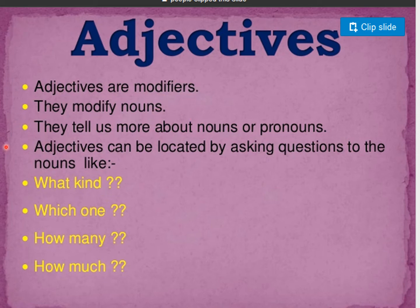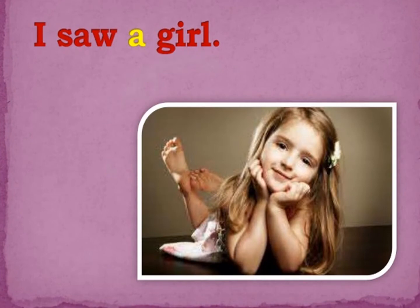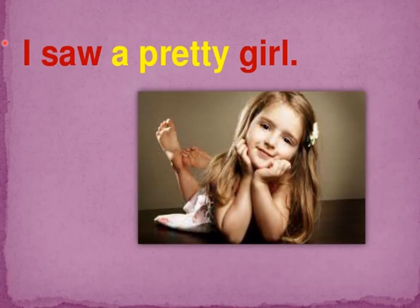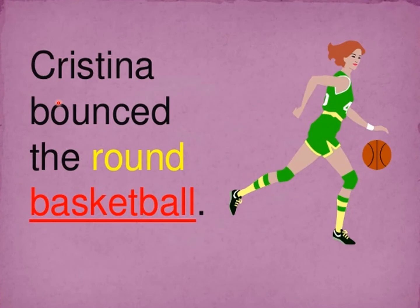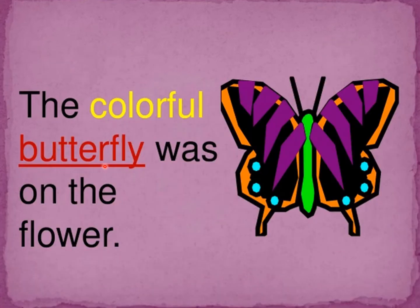Adjectives are modifiers. They modify nouns. They tell us more about nouns or pronouns. Adjectives can be located by asking questions to the nouns like: what kind, which one, how many, and how much. For example, 'I saw a girl' shows how many girls — it is one girl. 'I saw a pretty girl' — what kind of girl? She is pretty. Christina bounced the round basketball — the basketball is round. The colorful butterfly was on the flower — what kind of butterfly? Colorful.